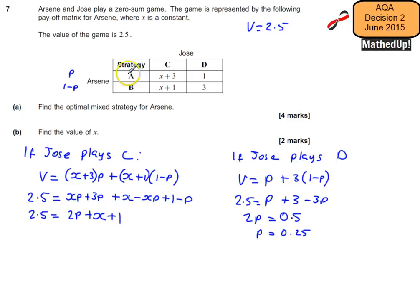So we've now been able to calculate the value for P, which is 0.25. So I can now use that information to say Arson should play strategy A 0.25 of the time and strategy B 0.75 of the time. So that's going to be his mixed strategy. Arson should play strategy A with probability 0.25 and B with probability 0.75.